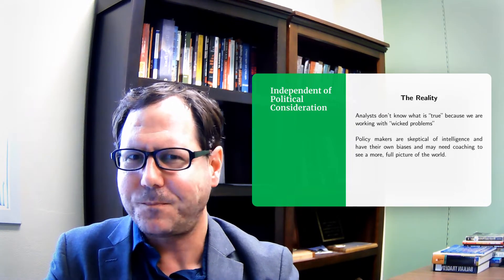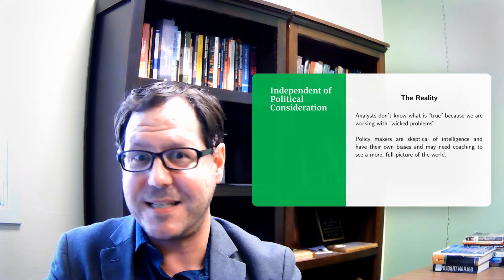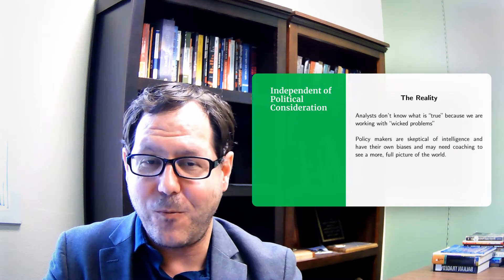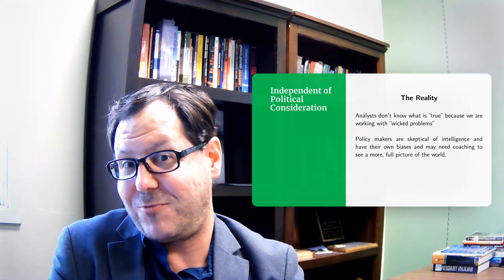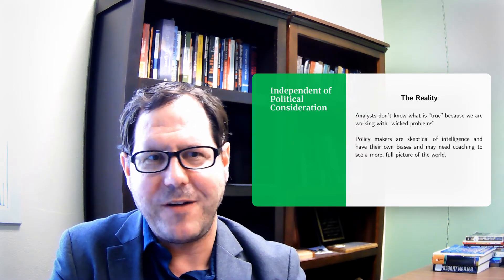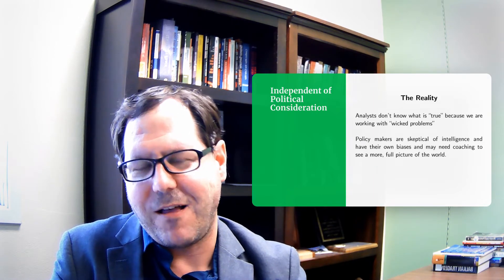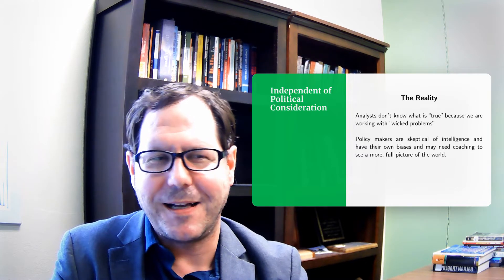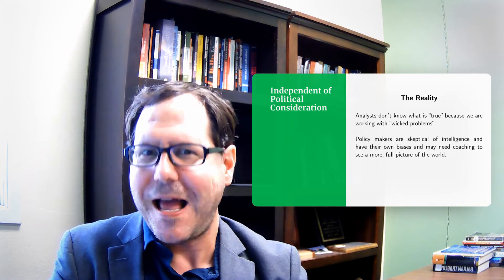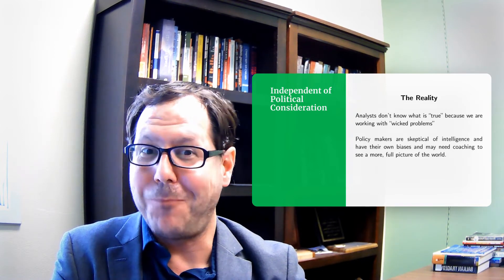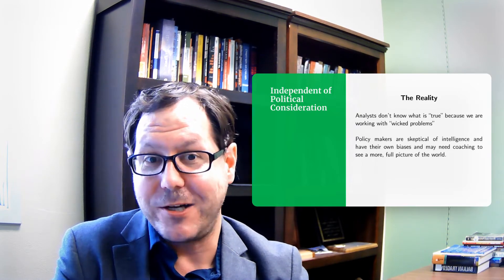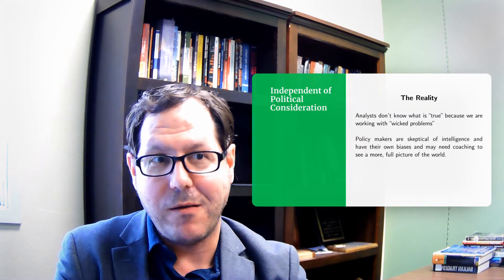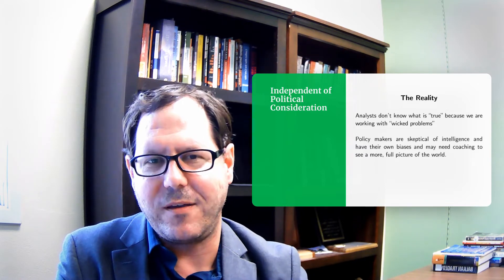Policymakers are oftentimes skeptical of intelligence. Part of that is that they have their own biases, pre-existing beliefs, desires to reach particular ends, their own sources of information, and they tend to think they're pretty smart people. So when you're presenting intelligence to a policymaker, that policymaker might not choose to use that information, and that's fine. There's an age-old adage that a policymaker is inclined to use intelligence the way a drunk uses a lamp post — for support rather than for illumination. The intelligence community's job is to provide the illumination. If policymakers choose to value the support rather than the illumination from an intelligence product, that's their prerogative. Nothing requires a policymaker to listen to or react to what the intelligence community is providing.